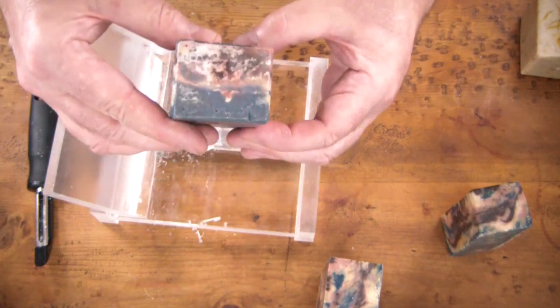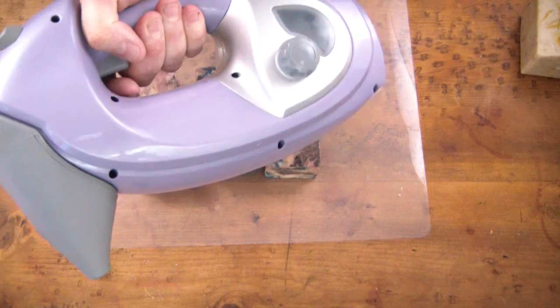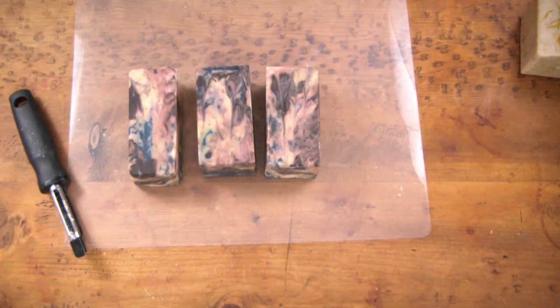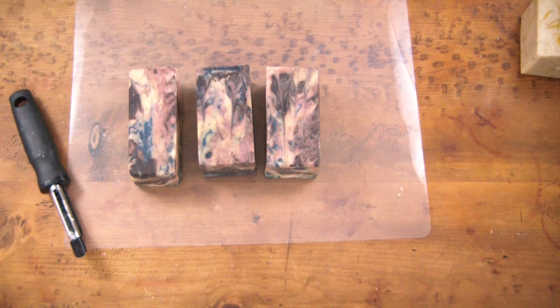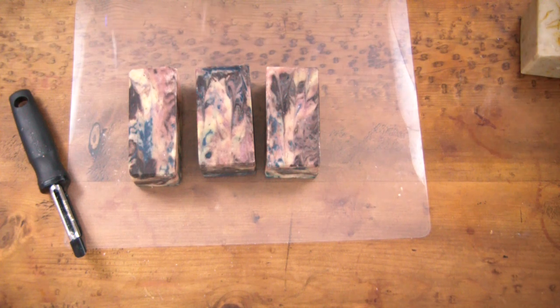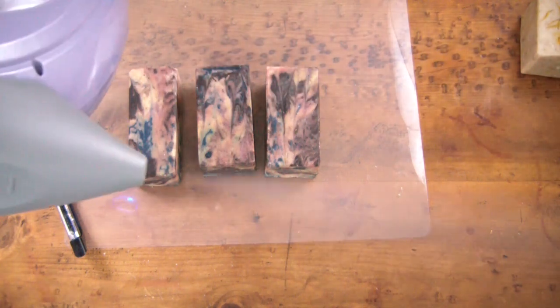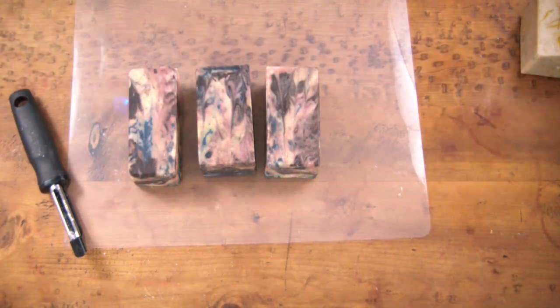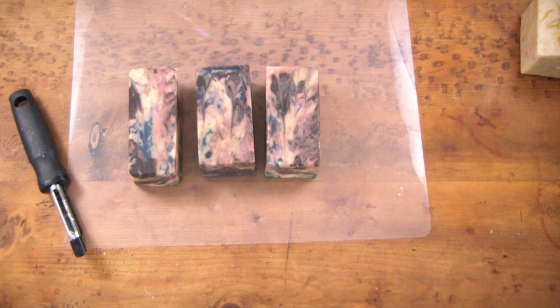The next step is to steam them. What is the purpose of steaming? Well, it removes the dullness or any ash that you may have on your soap. I generally don't have a problem with ash because I water discount. I rarely have seen ash on any of my soap.